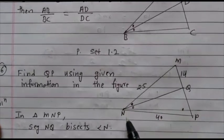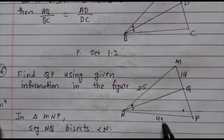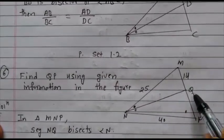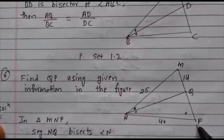MN value is given as 25, NP value is given as 40, MQ value is given as 14. We want to find out the value of QP.